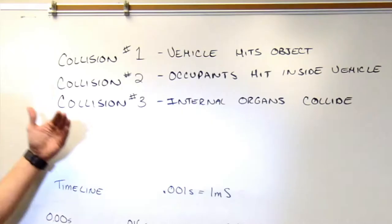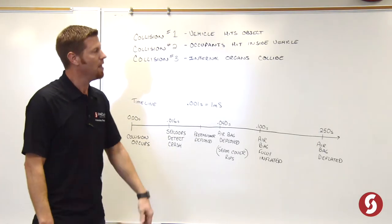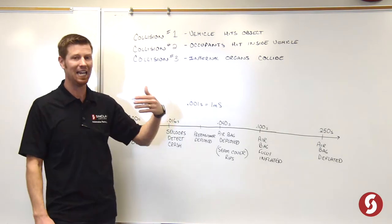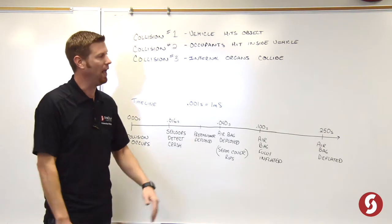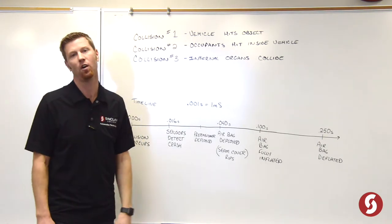Because in a crash, there are actually three collisions. You're going to have where the vehicle hits the object. Then you're going to have the occupants hitting inside the vehicle. And then inside the occupants, you're going to have their internal organs are actually going to collide.